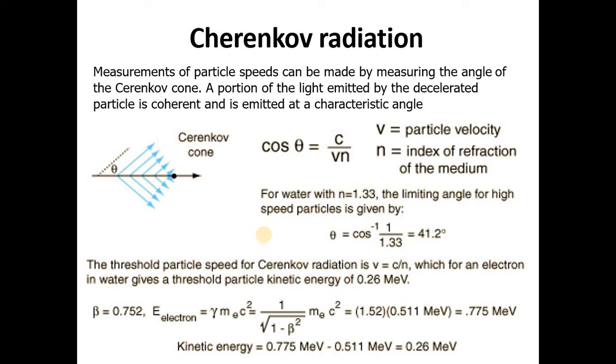For water, we have refractive index equals 1.33. The limiting angle for high speed particles is given by 41.2 degrees. Similarly, the threshold particle speed for Cherenkov radiation is calculated by the relation v equals c by n, which for an electron in water gives a threshold particle kinetic energy of 0.26 mega electron volt. Calculations are given.